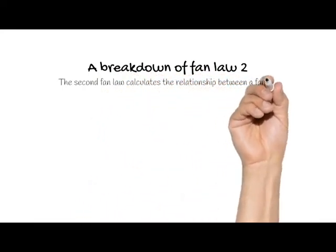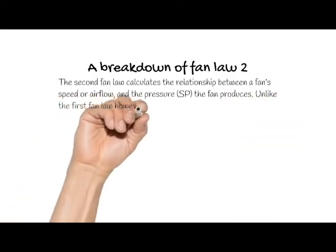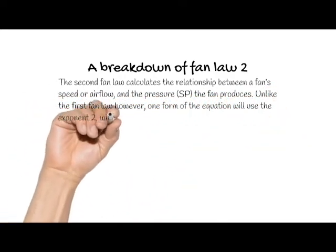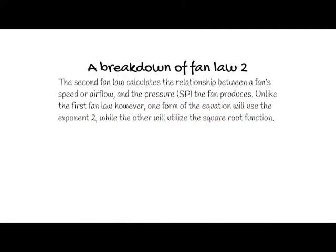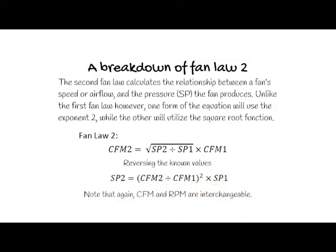Moving on to fan law 2. The second fan law calculates the relationship between a fan's speed or airflow and the pressure the fan produces. Unlike the first fan law, however, one form of the equation will use the exponent 2, while the other will utilize the square root function. Fan law 2 states CFM2 equals the square root of (static pressure 2 divided by static pressure 1), multiplied by CFM1. If we reverse the known values, static pressure 2 equals (CFM2 divided by CFM1) squared, multiplied by static pressure 1. Note that CFM and RPM are interchangeable.